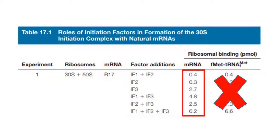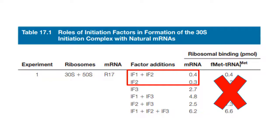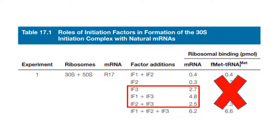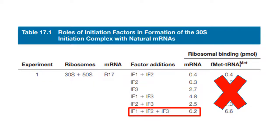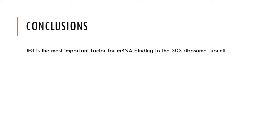Our first question is only looking at mRNA binding, so let's ignore the last column for now. When IF1 and IF2 were added, only 0.4 picomoles of mRNA bound to the 30S subunit. IF2 on its own mediated the binding of even less mRNA. Adding IF3 on its own actually led to a much higher ribosomal binding of 2.7 picomoles. If you add IF1 on top of IF3 you get even more binding, and adding IF2 in addition to IF3 gives about the same amount. The best mRNA binding occurs when all three initiation factors are present. So the data suggests that IF3 is the most important factor for mRNA binding to the 30S ribosome subunit.